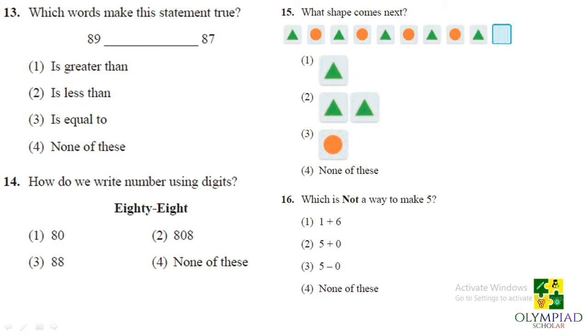Which words make these statements true? See 89 and 87. So first option is greater than 89 is greater than yes it is greater than 87 and it is less than equal to so these are not the correct answer. You can say that 89 is greater than 87.